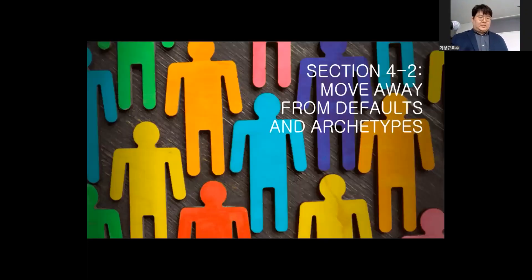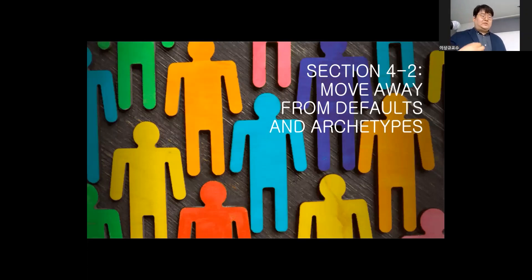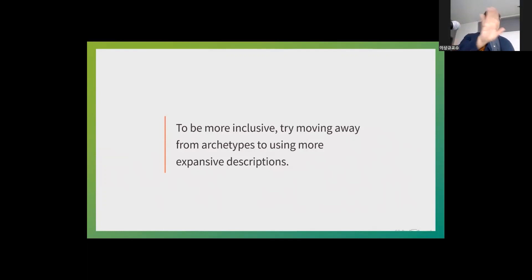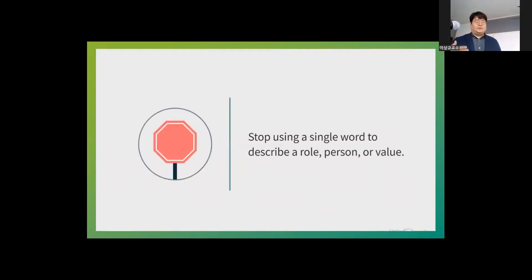Words that contain strong gender archetypes or defaults can lead to a sense of exclusion. Sometimes a word has an implicit meaning that reflects outdated or negative associations — I call these historical association archetypes. To be more inclusive, try to move away from archetypes and use more expansive descriptions. For example, instead of 'husband' or 'wife,' maybe use 'partner.' Archetypes may be difficult to see because associations are so firmly embedded in our consciousness.